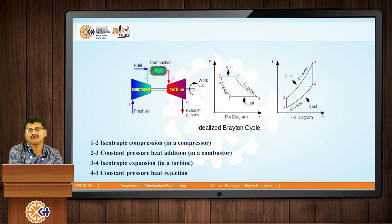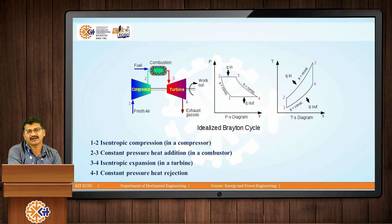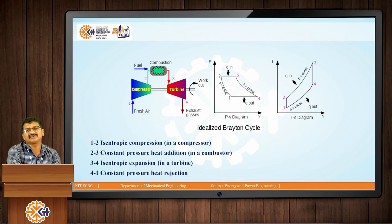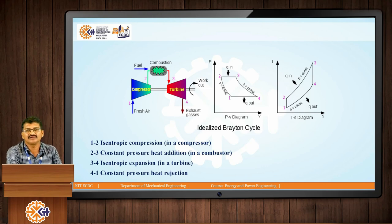This is the Brayton cycle. You can see what processes are shown — there are 4 processes: isentropic compression in the compressor, constant pressure heat addition in the combustor or combustion chamber, isentropic expansion in the turbine, and constant pressure heat rejection. In the closed system, after exhaust, a heat exchanger is added where constant pressure heat rejection takes place.